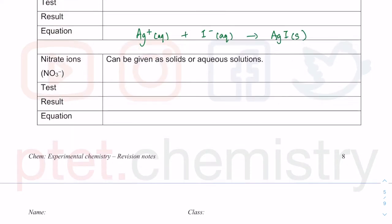For the nitrate test, you add aluminum foil — the aluminum foil is a solid — and then add aqueous NaOH. Then we warm. I'm not going to write the equation for this; you can ignore writing the equations until we come to the next topic, which is on redox.